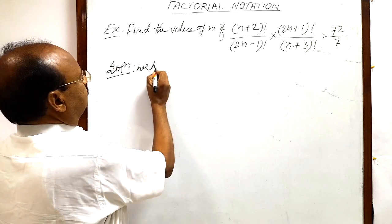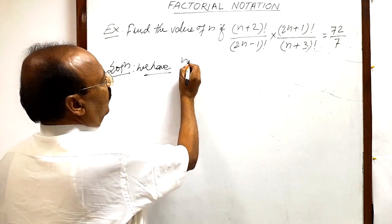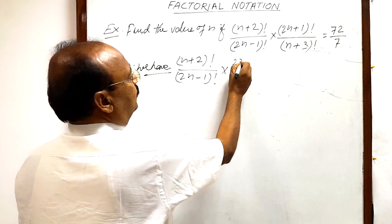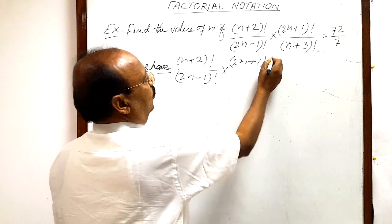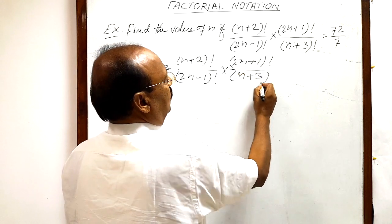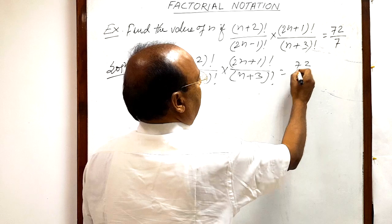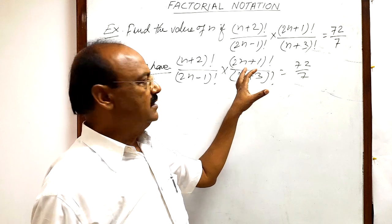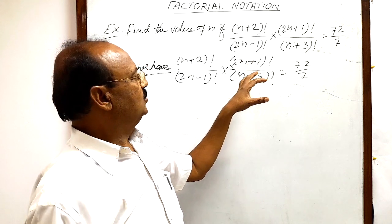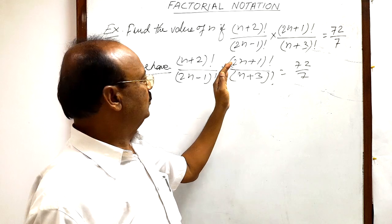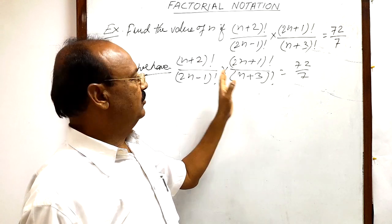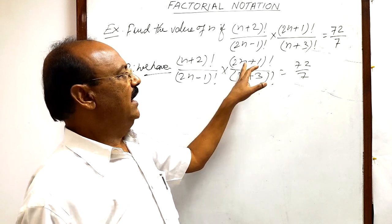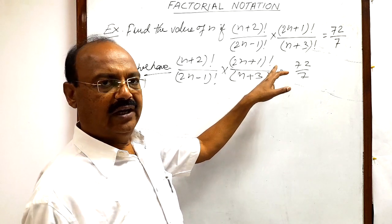We have (n+2)! / (2n-1)! times (2n+1)! / (n+3)! = 72/7. First of all we will expand some of the factorials so that we could simplify it and cancel out some factors from numerators and denominators. For example, we can write (2n+1)! as (2n+1) × 2n × (2n-1)!.